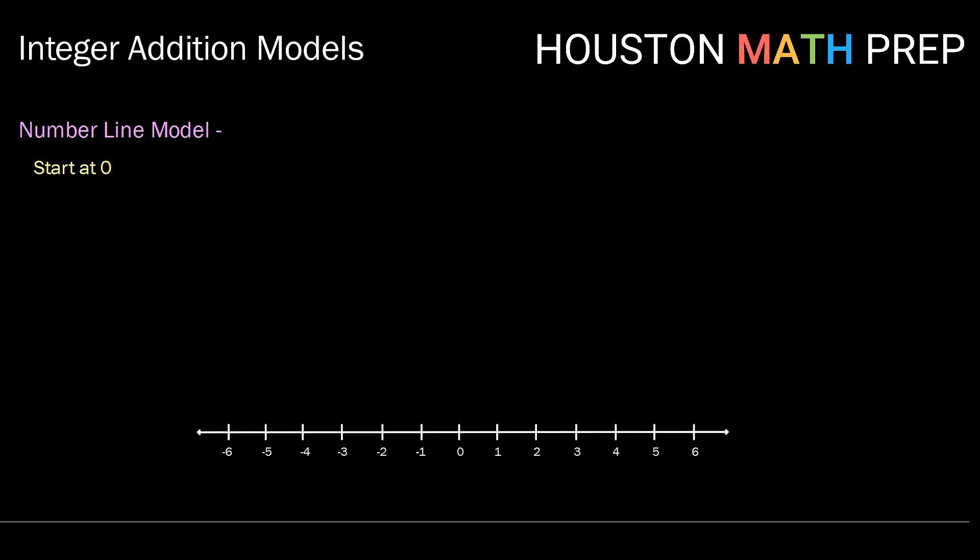So let's take a look. With the number line model, we're going to start at zero. I like to have some sort of creature here moving. We're just going to use our little running man here, but you might work with a cat or a dog or a monkey or whatever.